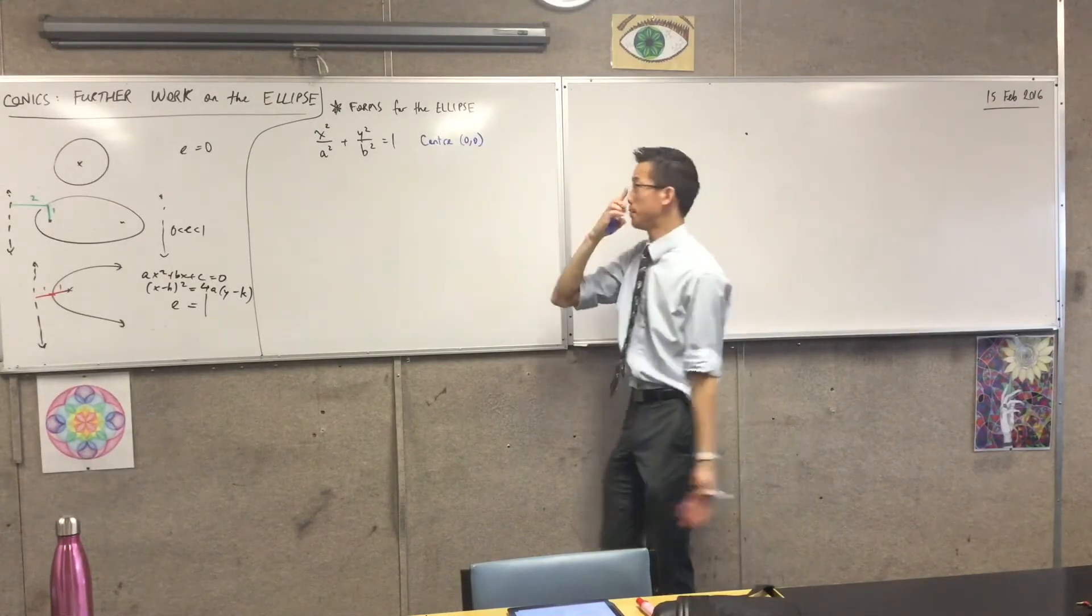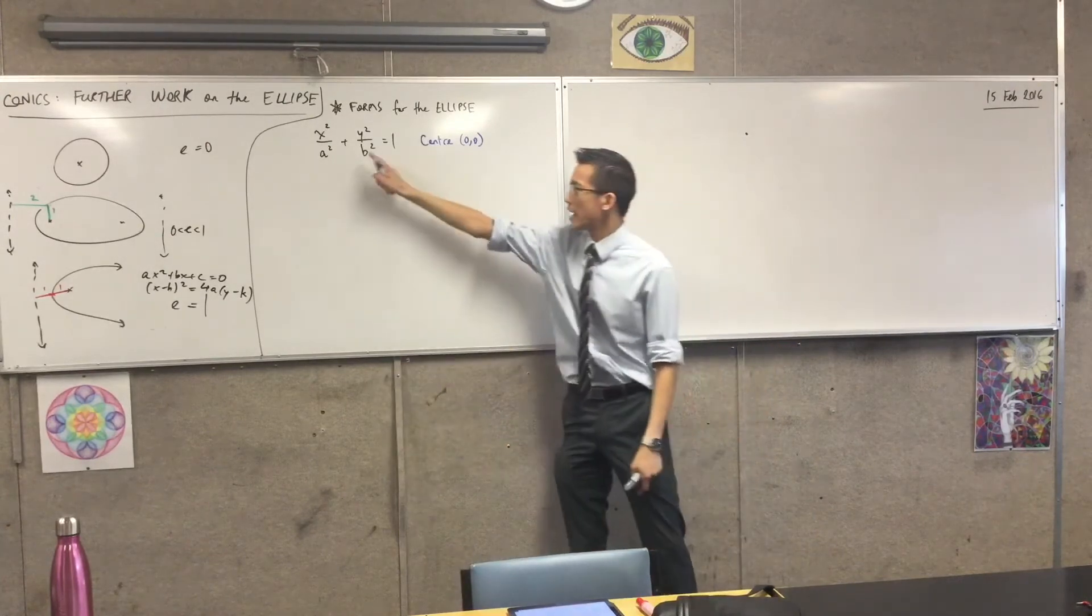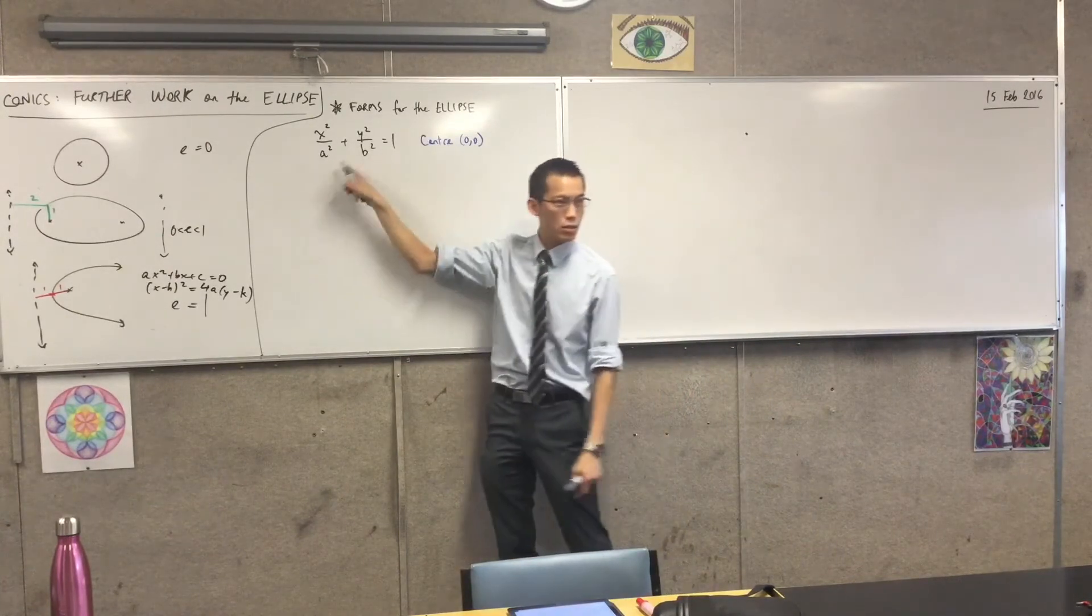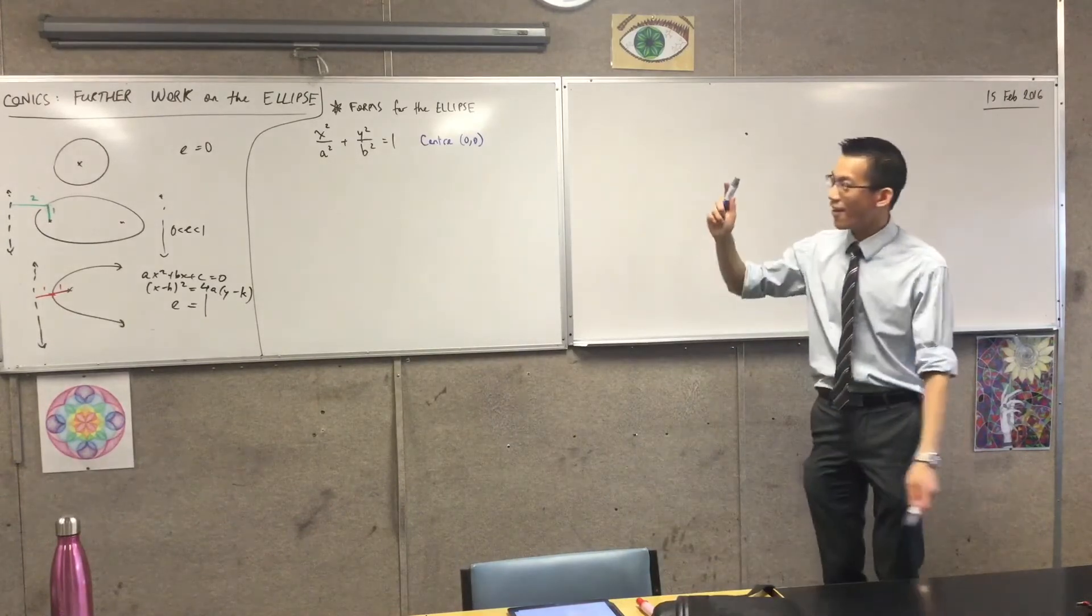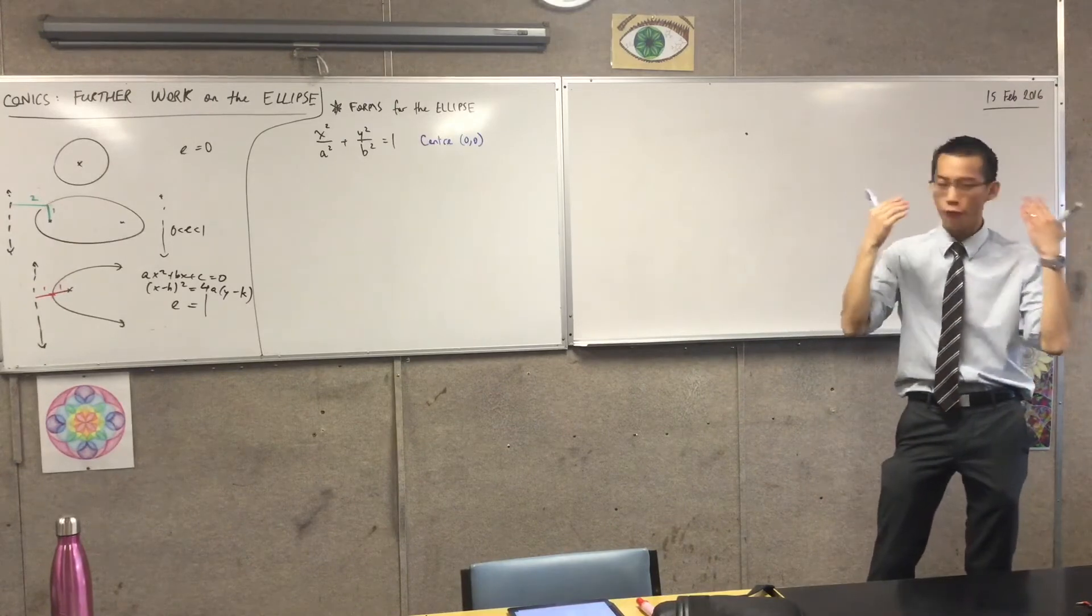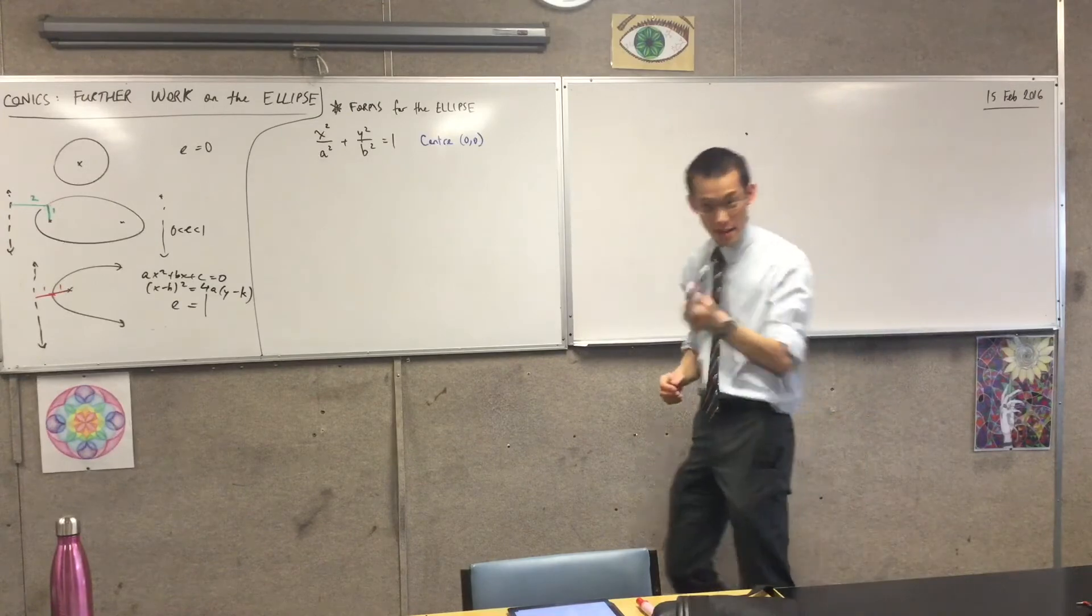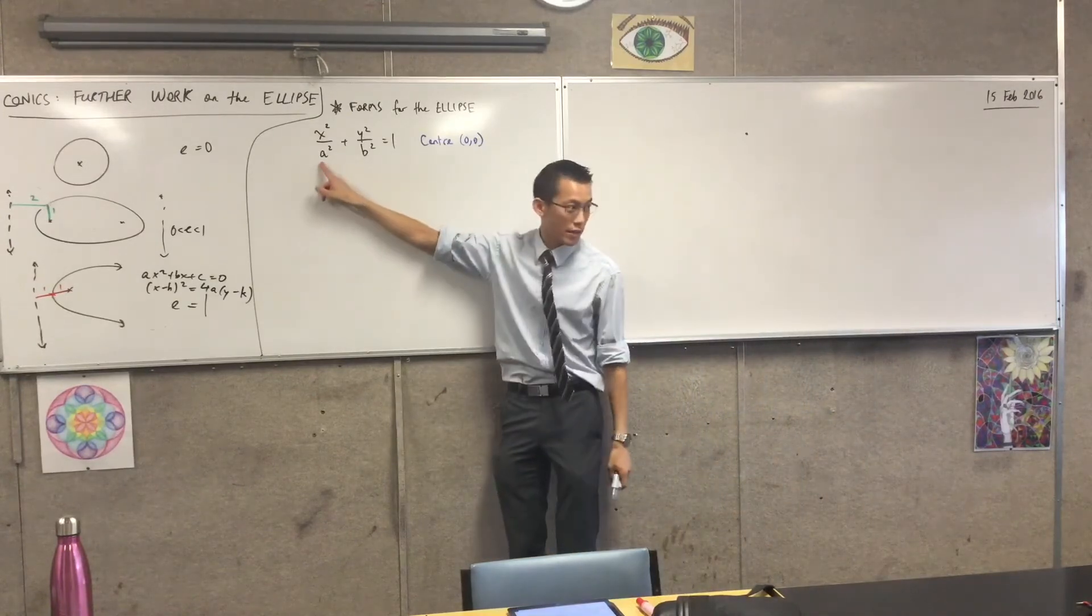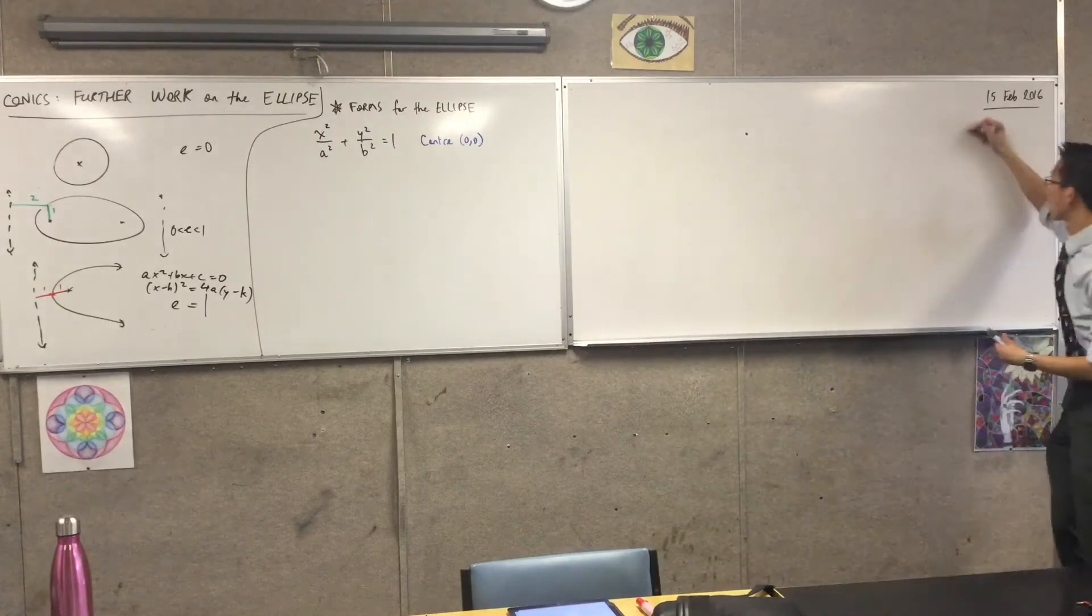We saw actually early on what happens when you have an ellipse and it's not at the center. It still works out. You still end up getting something like this, but it's just messy. It's harder to work with. So that's center zero, zero. The other thing I want to note is that so far, and I'm going to try and keep this consistent, we've been saying that a is greater than b. Like of these two numbers, a is the bigger number. Now do you remember, on this guy, what is the significance of a and b? Like what features do they tell us about the ellipse? Do you remember? Major and minor axis. Yeah, very good. This will tell you the major axis, and this is the minor axis.